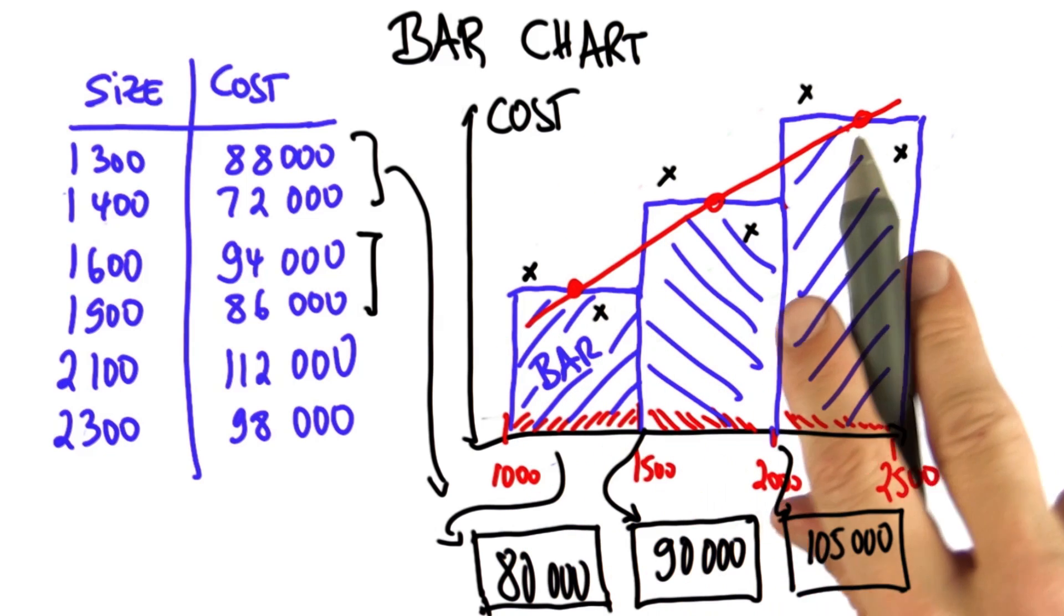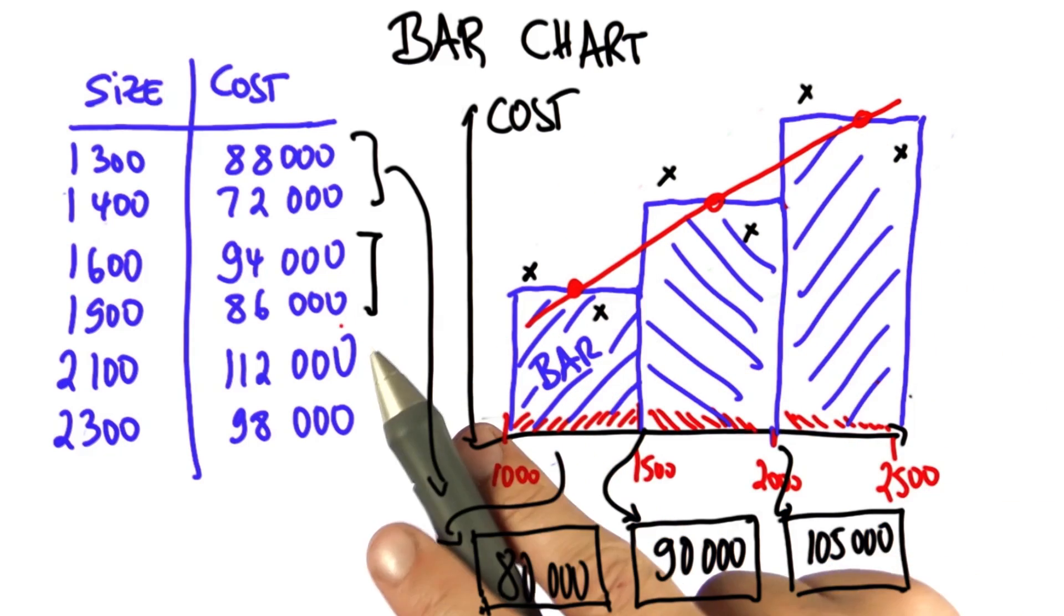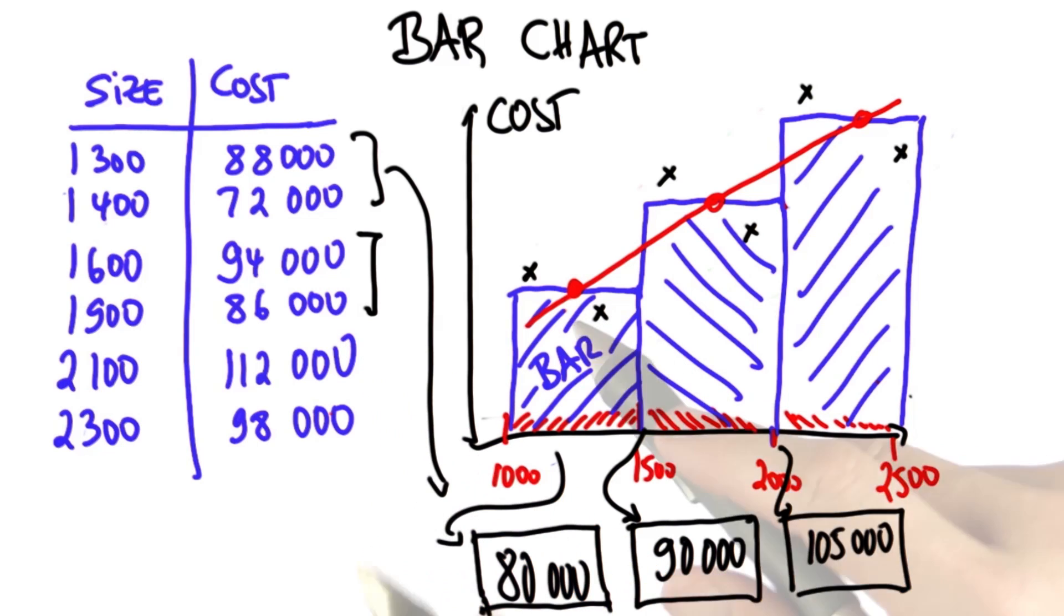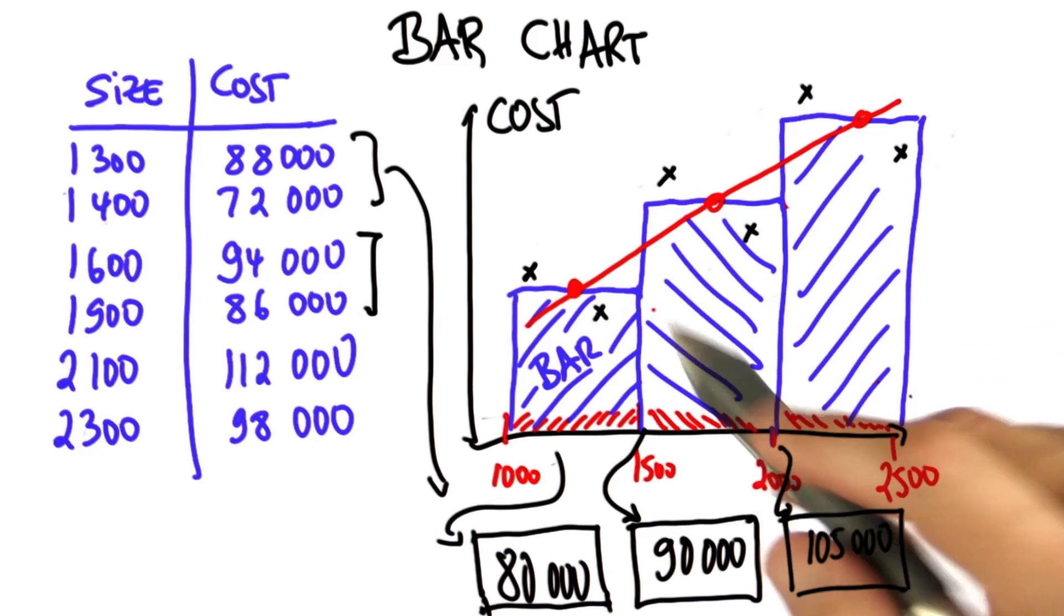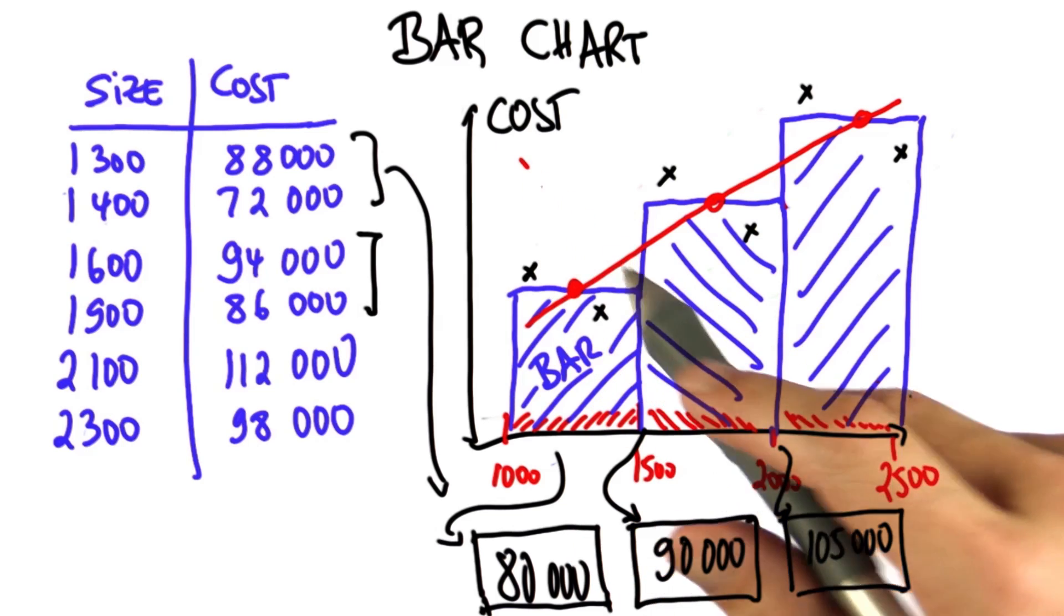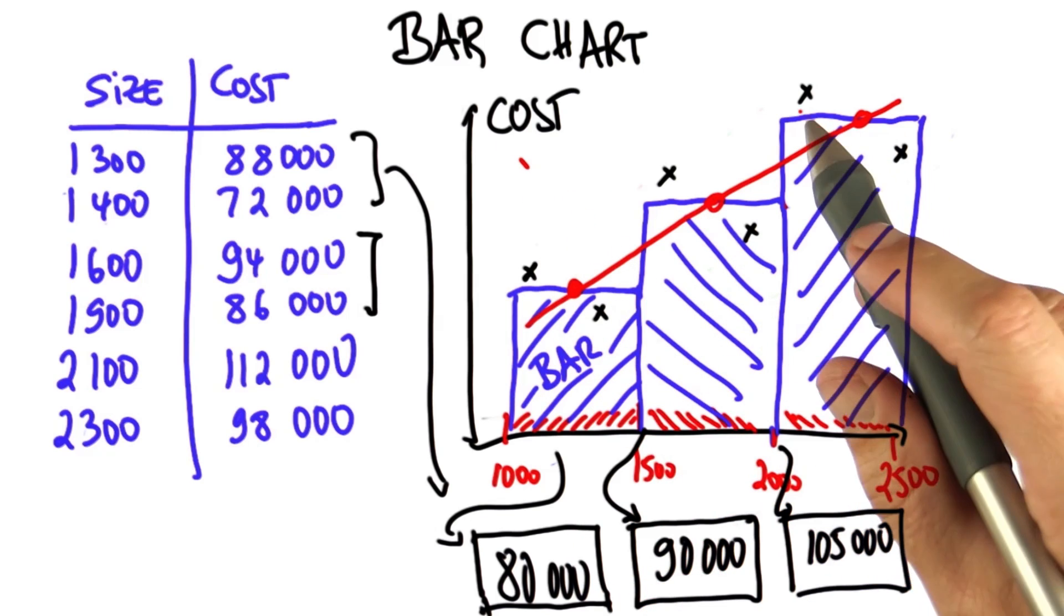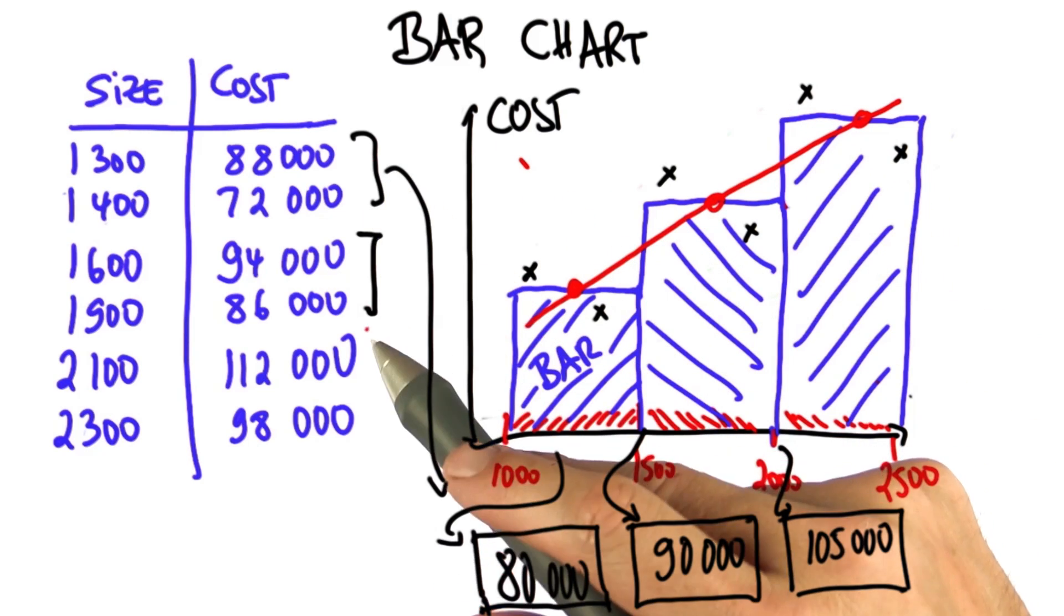While the bar chart doesn't give you the linear relationship—in fact, in this case it happens to be non-linear—it gives you a sense that as you go up in house sizes, the cost increases, which wasn't obvious from looking at individual data points.